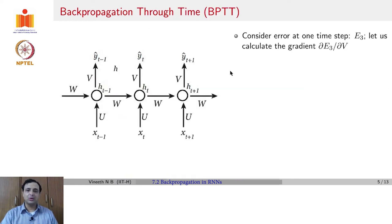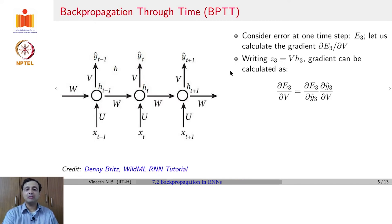Before we go into computing ∂E_t/∂W, let us take a simpler case and try to compute ∂E_t/∂V. In particular, let us consider ∂E_3/∂V, which is the third time step. To compute ∂E_3/∂V, let us assume that we can write Z_3 to be V H_3. Then the gradient can be computed as ∂E_3/∂V equals ∂E_3/∂Y_3 hat times ∂Y_3 hat/∂V. Now, Y_3 hat is a softmax of Z_3. That is the way we have defined this network.